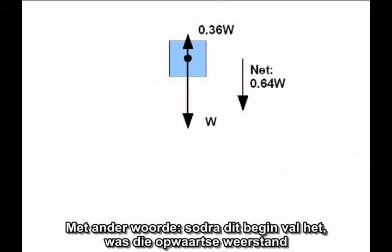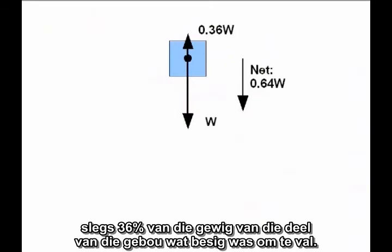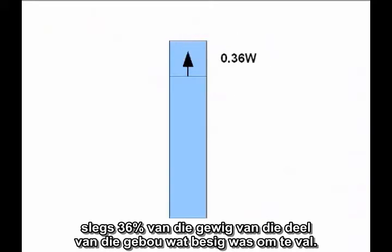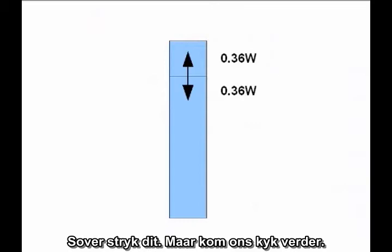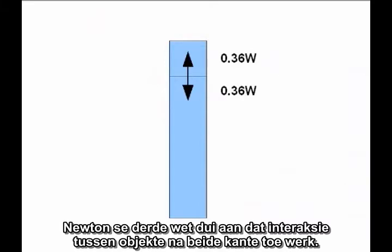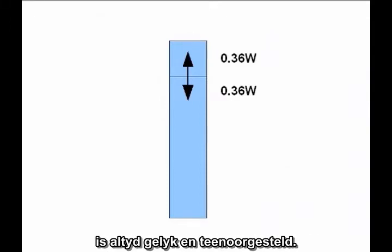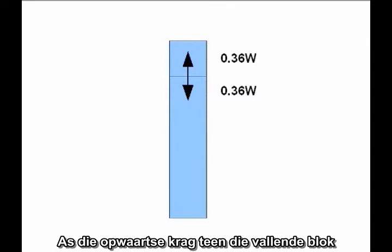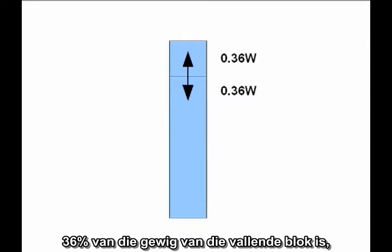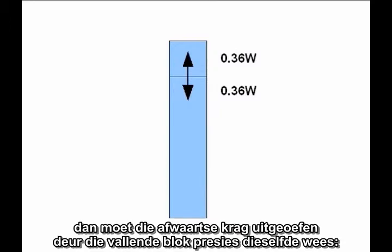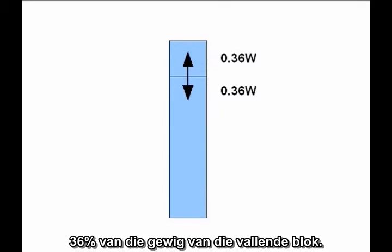In other words, once it starts falling, the upward resistive force is only 36% of the weight of the falling section of the building. But now turn it around. Newton's Third Law says interactions between objects work both ways — the forces two objects exert on each other are always equal and opposite. If the upward force acting on the falling block is 36% of the weight of the falling block, the downward force exerted by the falling block must be exactly the same: 36% of the weight of the falling block.